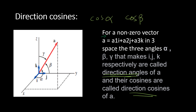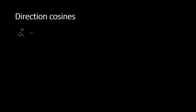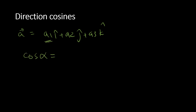The cosines of these angles — cosine of alpha, cosine of beta, and cosine of gamma — are called the direction cosines. Don't worry if you don't get it right now because we're going to go over an example. Now let me give you the formulas. Given a vector A = a1î + a2ĵ + a3k̂, to find the direction cosines: cosine of alpha equals a1 over the magnitude of A.